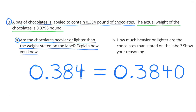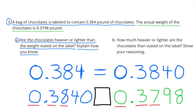384 thousandths is the same as 3,840 ten-thousandths. They're equal in the ones place with a zero, and equal in the tenths place with a three. But they're not equal in the hundredths place — the 8 is greater than the 7. So 3,840 ten-thousandths, or 384 thousandths, is greater than 3,798 ten-thousandths.